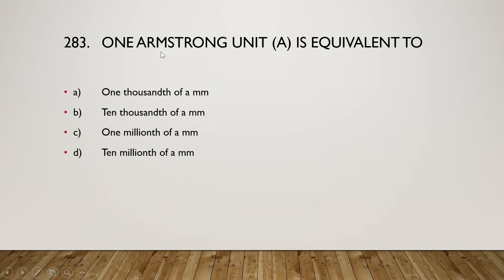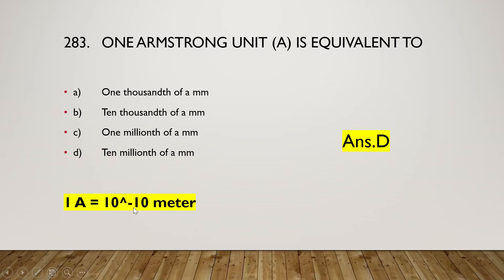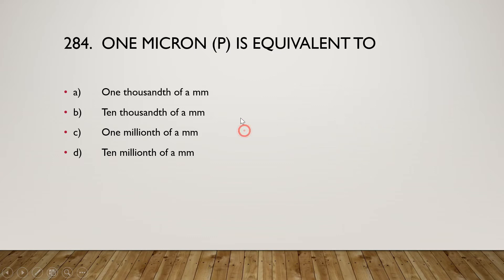The next question is: one Angstrom unit is equivalent to (A) one thousandth of a millimeter, (B) ten thousandth of a millimeter, (C) one millionth of a millimeter, or (D) ten millionth of a millimeter. The right answer is option D — ten millionth of a millimeter. One Angstrom equals 10 to the power of minus 10 meters.